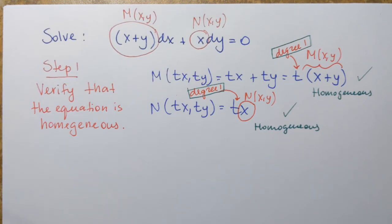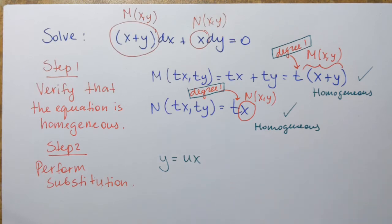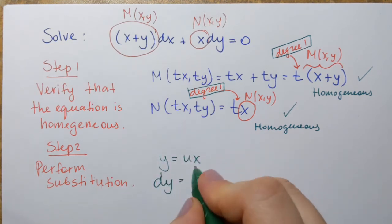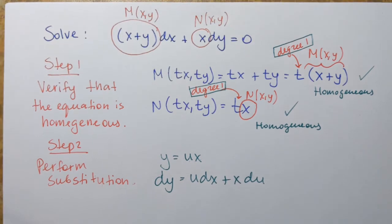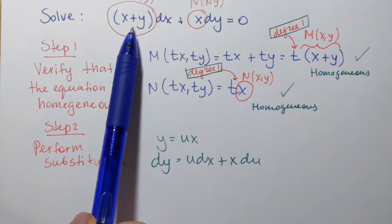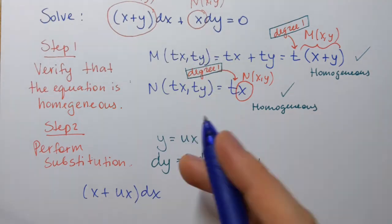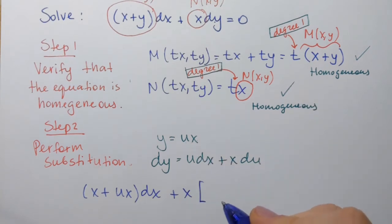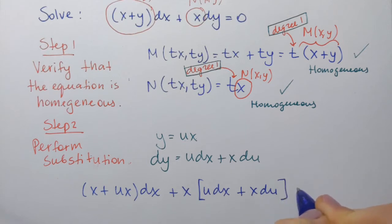Once we verify that, the next step is to perform substitution. We say that y is going to be replaced with ux in the equation, and dy will be replaced with u dx + x du, which is the derivative of the right-hand side as we already discussed. So we get: (x + ux) dx + x(u dx + x du) = 0. Since it's an expression inside the brackets, we need to keep it properly grouped: x plus ux times dx plus x times the quantity u dx plus x du equals zero.